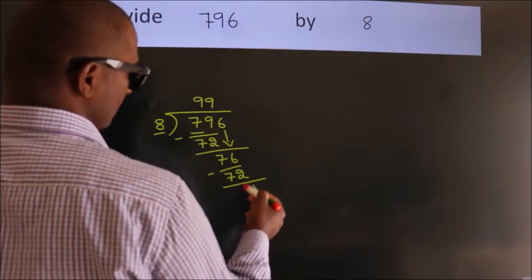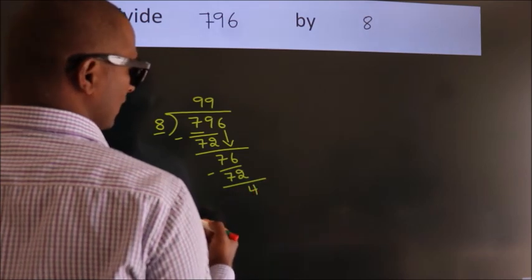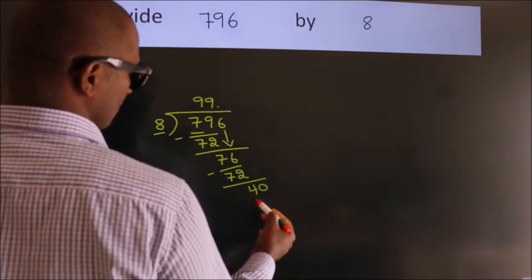After this, no more numbers to bring down. So what we do is, we put dot, take 0. So, 40.